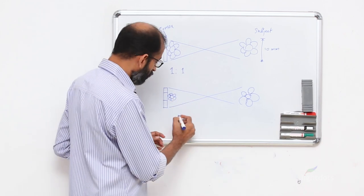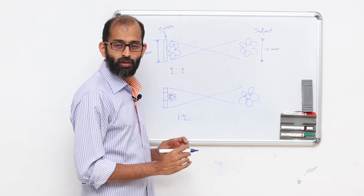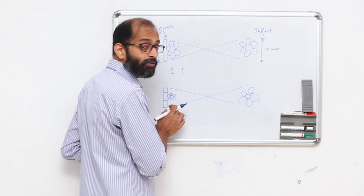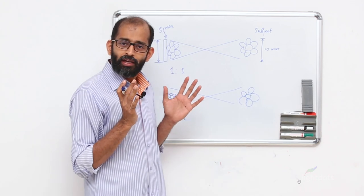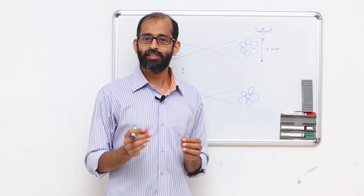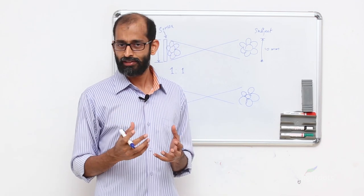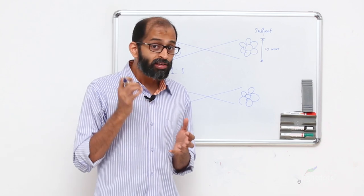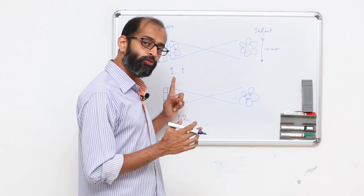This is going to be one is to two ratio, half of the size. This is not a macro. So if you ever happen to understand or try to buy a lens doing real macro, please look for one is to one reproduction ratio.